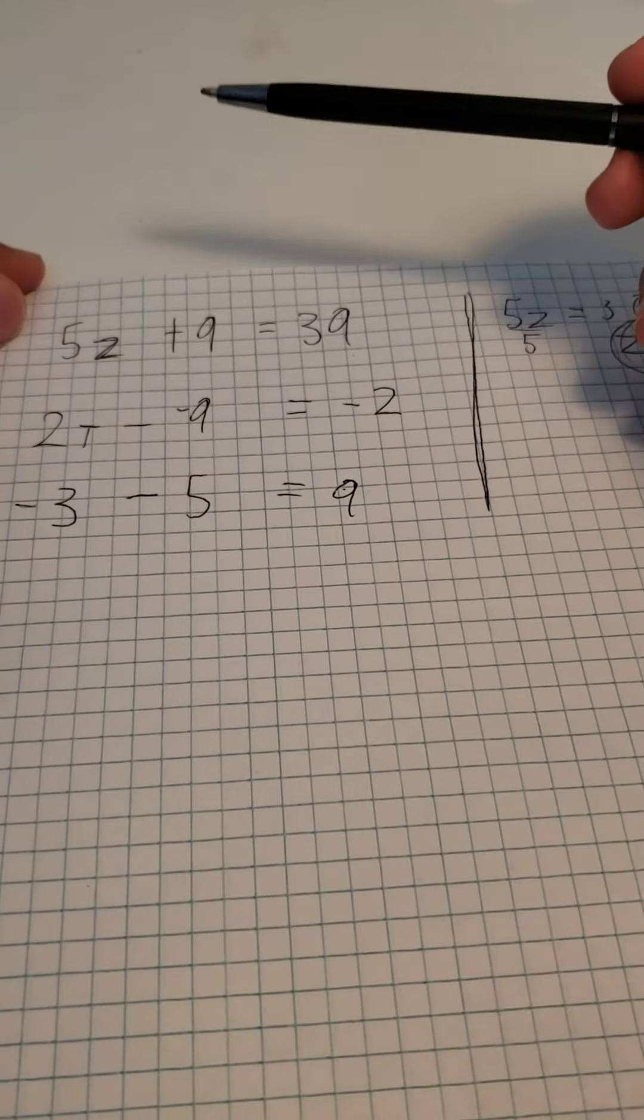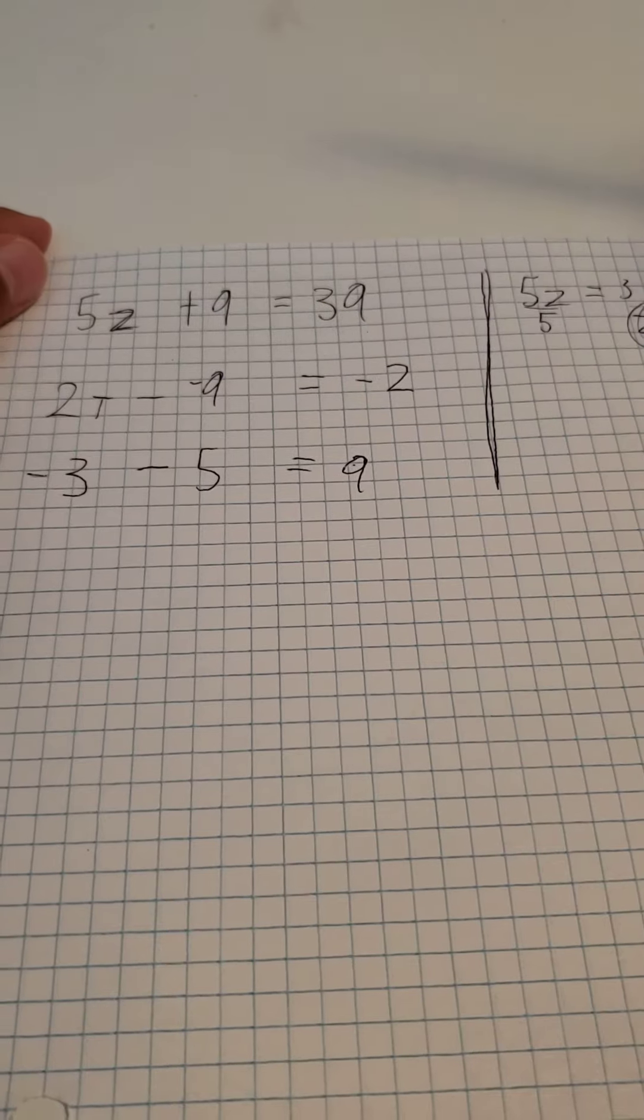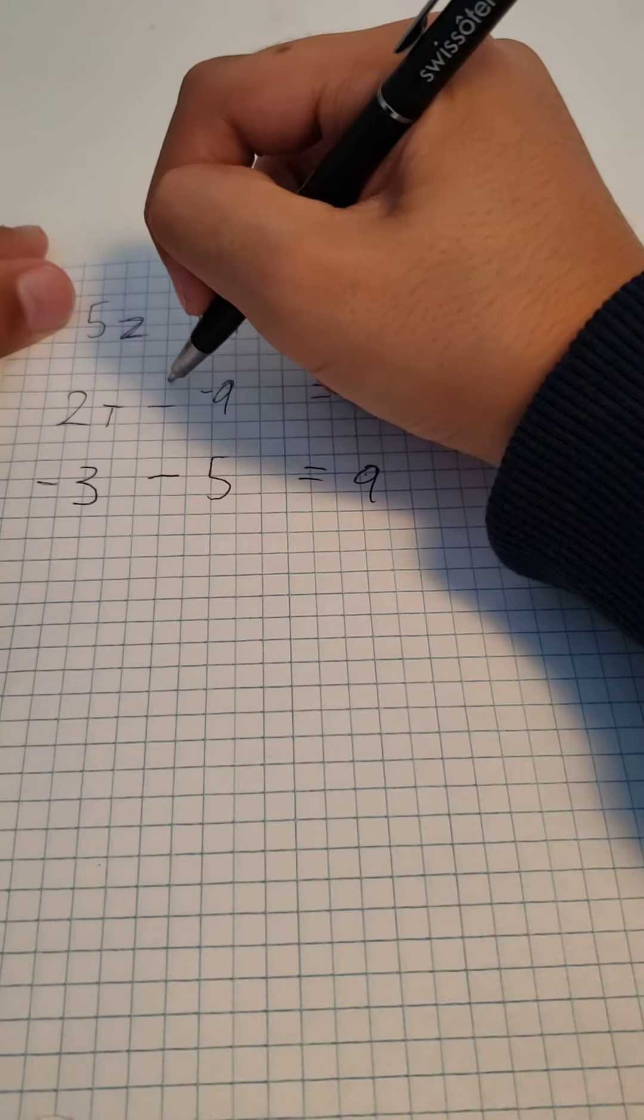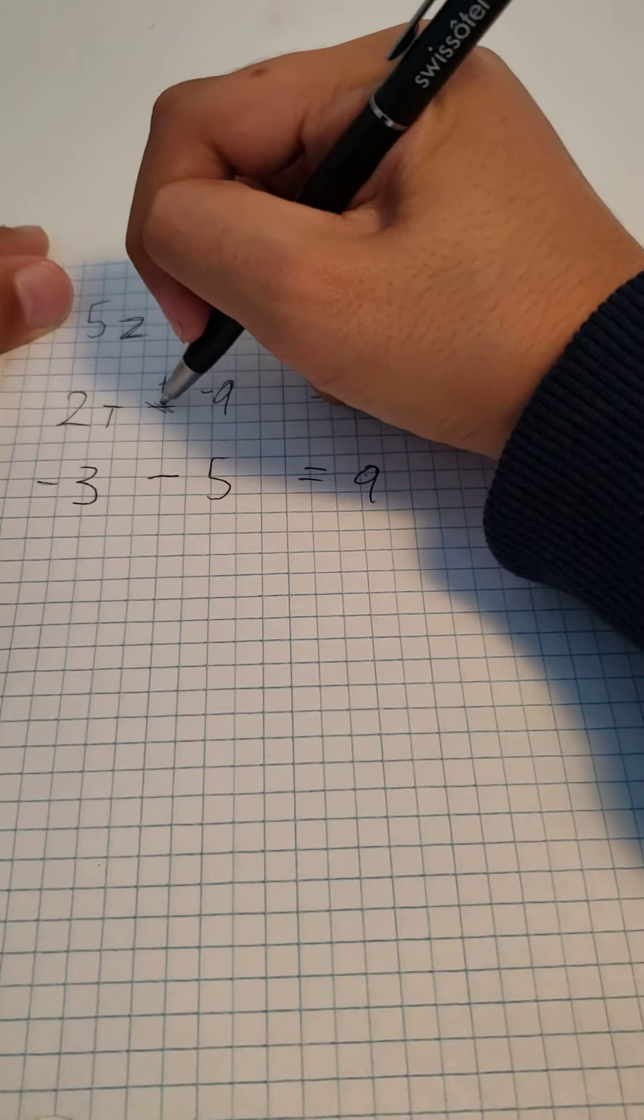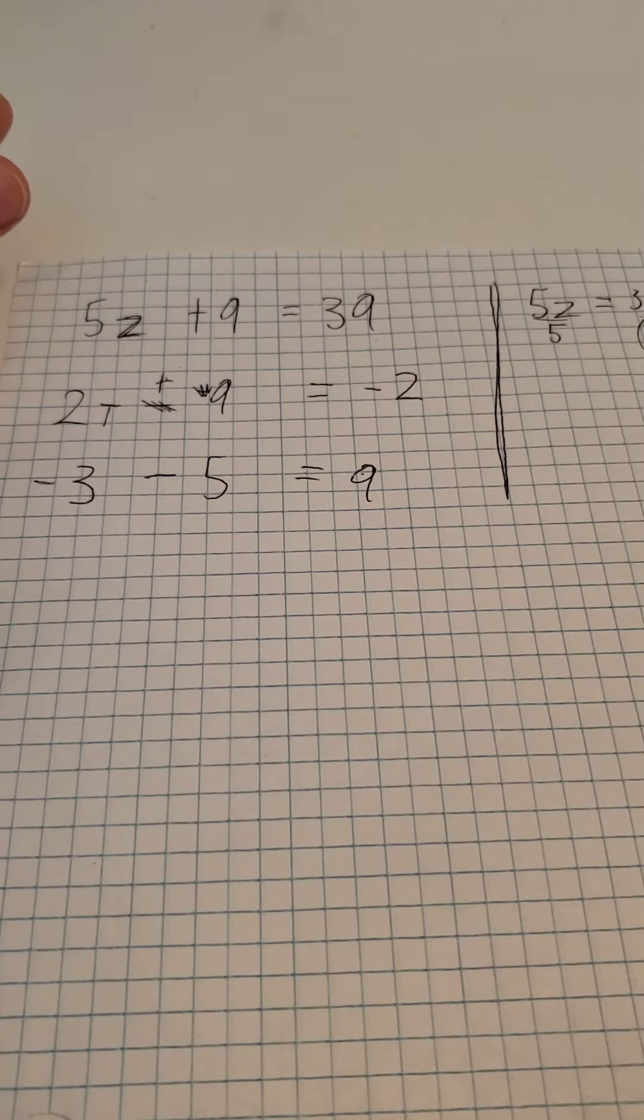And everyone knows that when you are subtracting a negative number, it is in fact a plus, so you can get rid of this minus and this negative. So 2t plus 9 is the same thing as 2t minus negative 9.